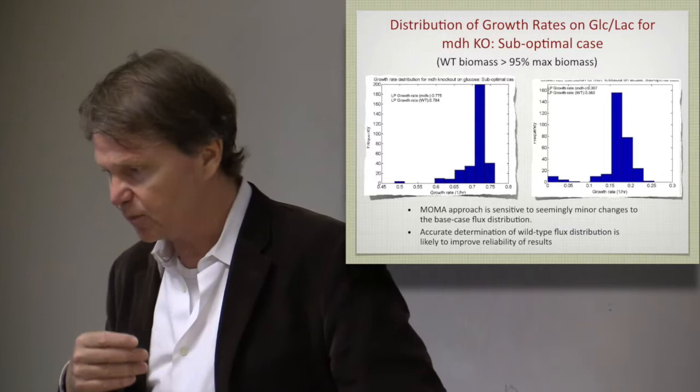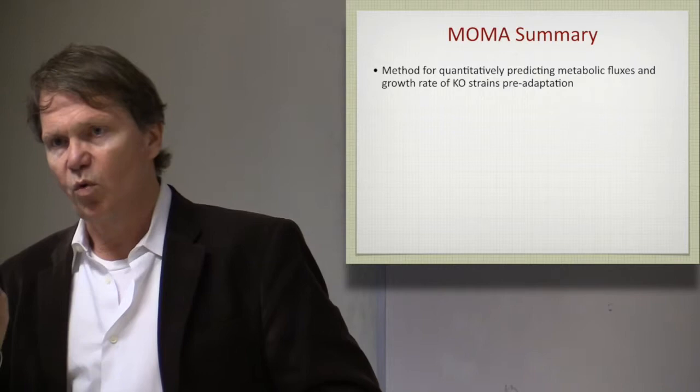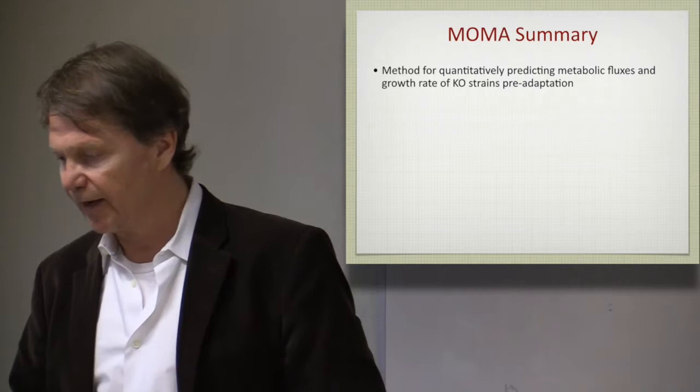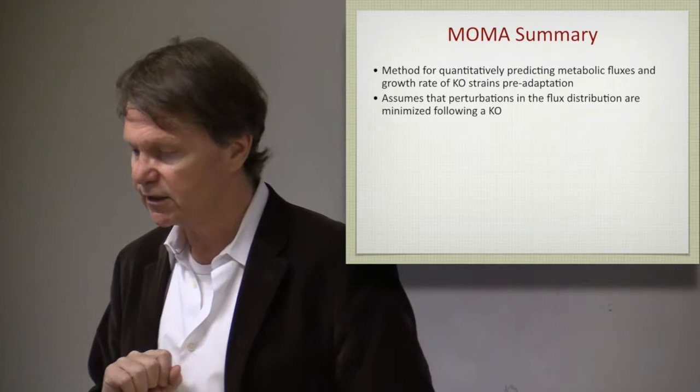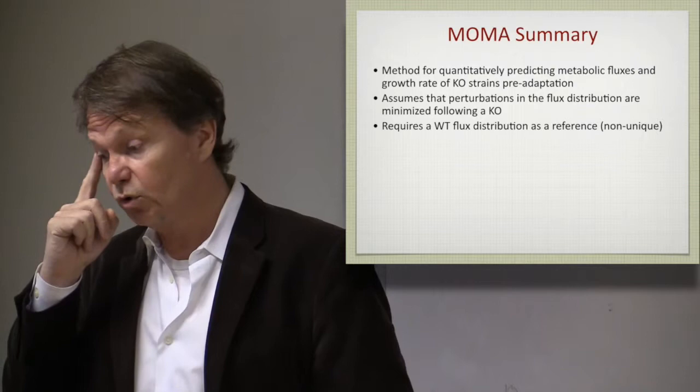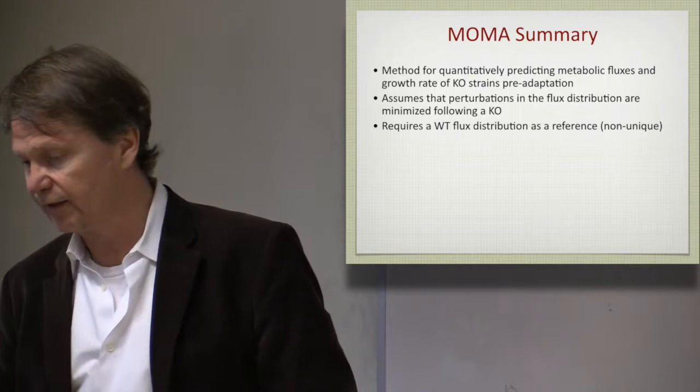Okay. So the MOMA summary, this has been used so much it's worth saying a few things about it. So this is a method for quantitatively predicting a flux state following a gene knockout. And it's based on minimizing a distance metric, which in this case is Euclidean distance. It does require a starting point to project from. That may not be unique, so you may have to sample that and have a few of them.